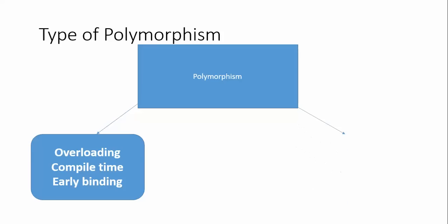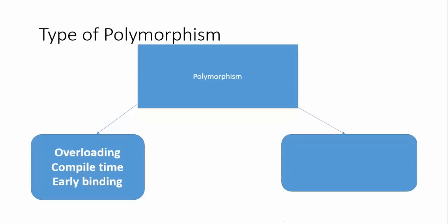We have another type called runtime polymorphism, also known as late binding. To achieve runtime polymorphism we need to understand method overriding. We will discuss this part once we cover inheritance. As of now we will stick to method overloading and then see how it is called compile-time polymorphism.